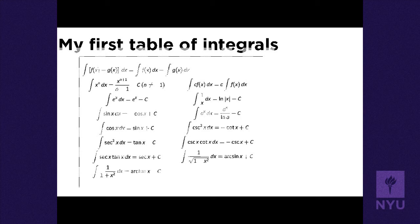The antiderivative of x⁻¹ is ln|x|. Constants pull through. The integral of eˣ is eˣ. The integral of aˣ is aˣ/ln(a). The integral of sin is -cos. The integral of cos is sin. The antiderivative of sec²x is tan x, of sec x·tan x is sec x, and the antiderivative of 1/(1 + x²) is arctan x.